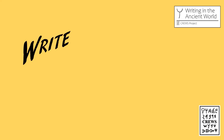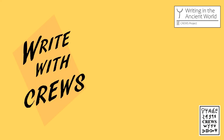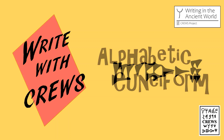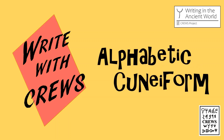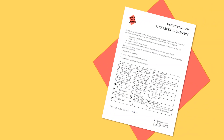Hi, I'm Philip. In this Write with Cruise mini lesson we're going to be learning about alphabetic cuneiform, sometimes also known as Ugaritic. If you want to follow along too, you're going to need this worksheet which you can get from the Cruise Project website.